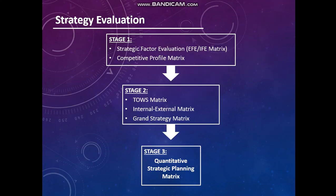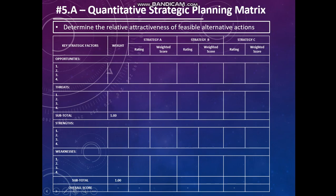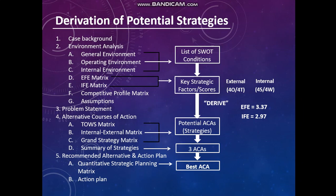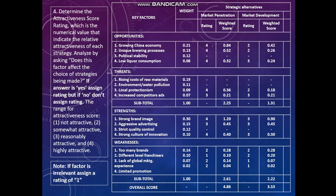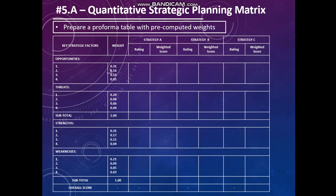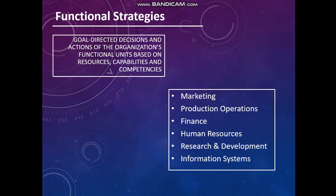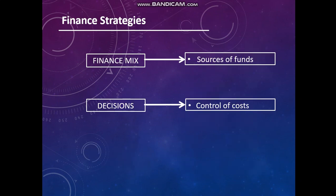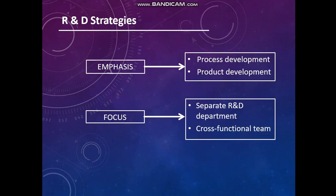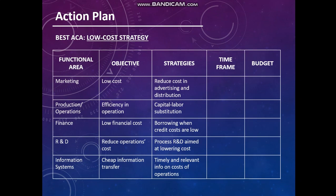The recommended alternative action plan uses key strategy factors with strategies A, B, and C from the matrices. Functional strategies include production and operations strategies, finance strategies, human resource strategies, R&D strategies, information system strategies, and action plan low-cost strategies.